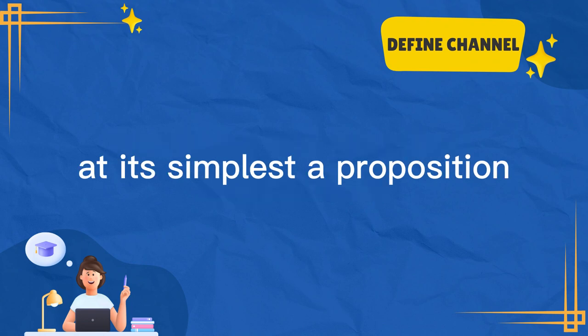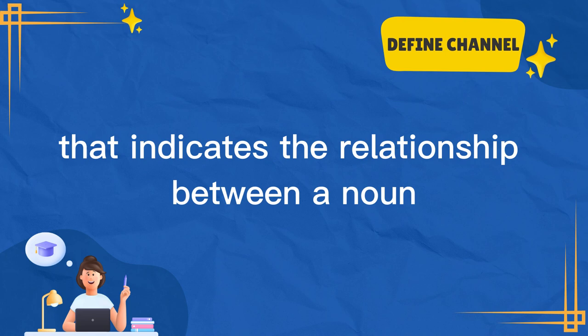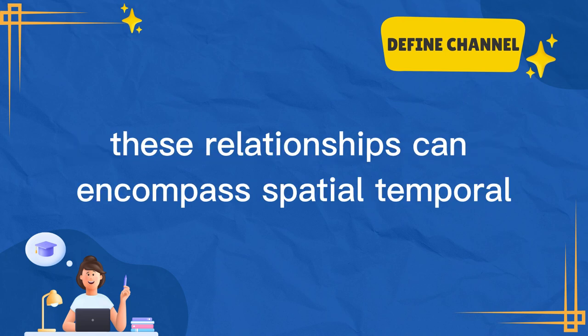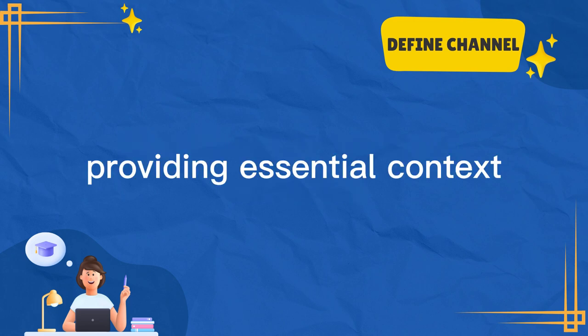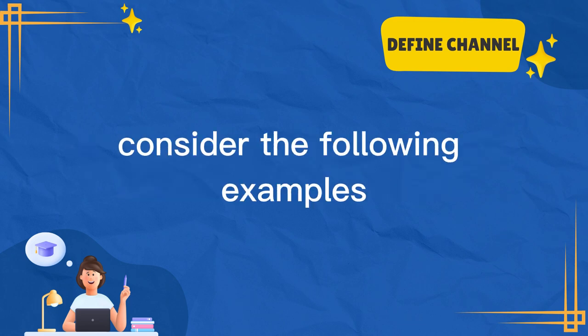At its simplest, a preposition is a word that indicates the relationship between a noun or pronoun and other elements in a sentence. These relationships can encompass spatial, temporal, directional, or abstract concepts, providing essential context for understanding the overall meaning of a sentence.